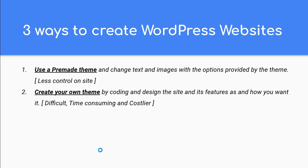The solution is you create your own theme by coding. Using HTML, CSS, and JavaScript, you can create the front-end of a website just like a static website, and then use PHP skills and WordPress functions and classes to create a WordPress theme of your own to meet your client's requirements.